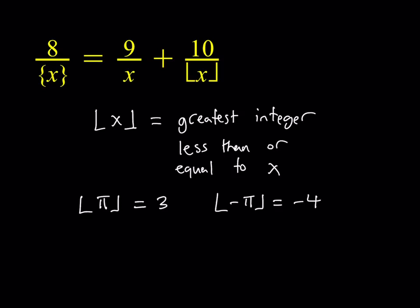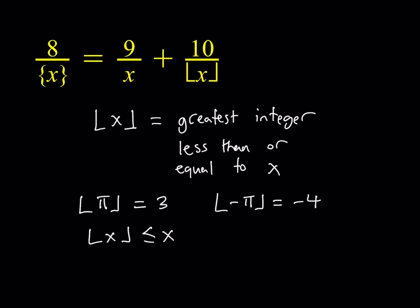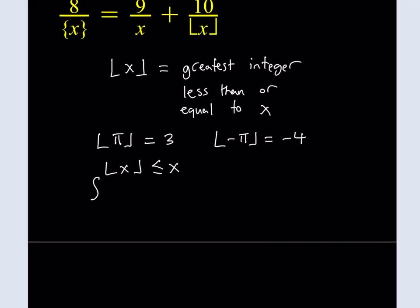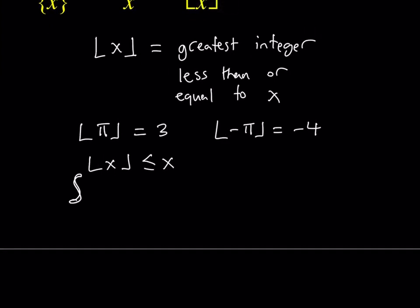We can safely say that the floor value of x is always less than or equal to x. Now, comparing the floor value of x and x itself, we're looking at the difference. The fractional part of x — which we denote with braces — is defined as x minus the floor value of x.